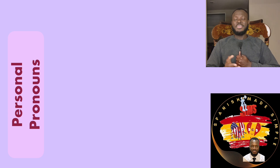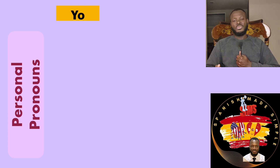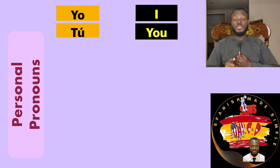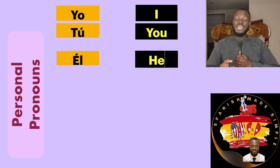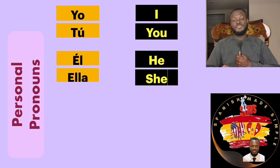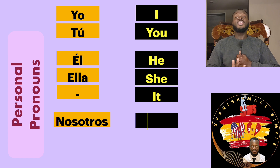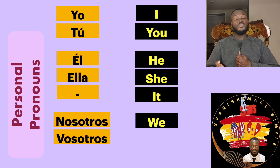Unlike English, in Spanish personal pronouns are not mandatory — you may use them or you may not. It's up to you, but you have to know them. The first one is 'yo' for 'I.' 'Tú' for 'you.' 'Él' for 'he.' 'Ella' for 'she.' 'It' doesn't exist in Spanish — you have to be either male or female, no neutral. 'Nosotros' for 'we.' 'Vosotros' for 'you' (plural).